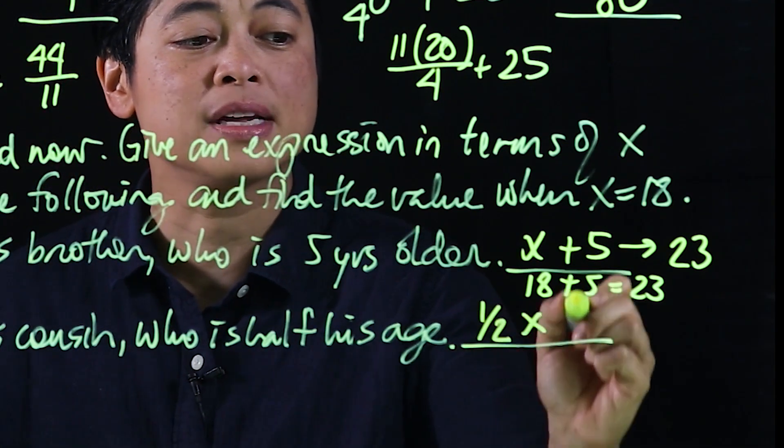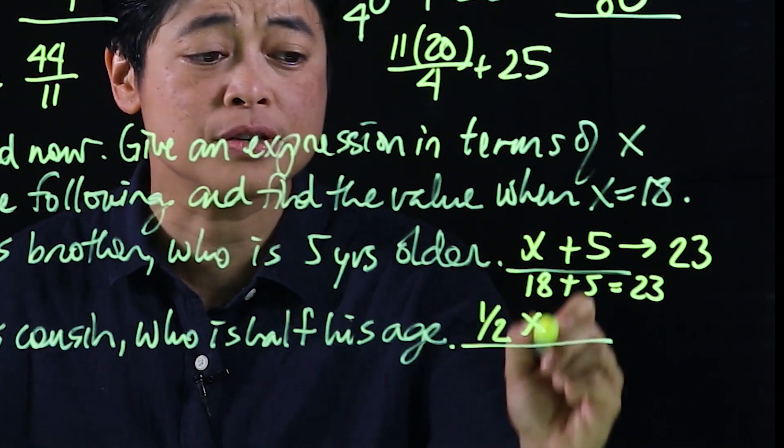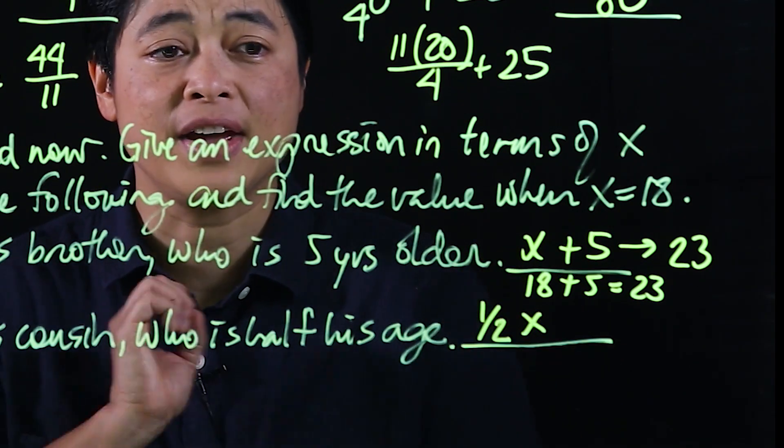You see, if I put 1 half and then times and then x, that's very confusing. So that's why it's best to just write it as 1 half of x.